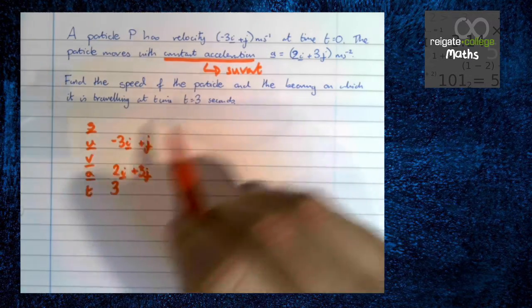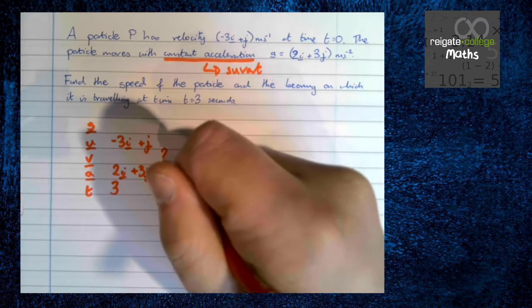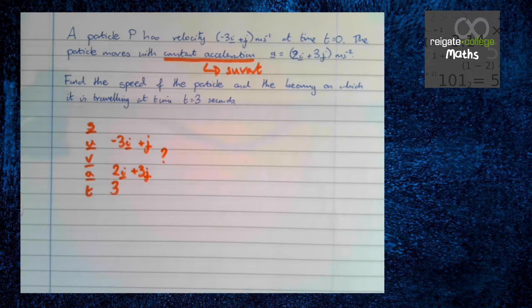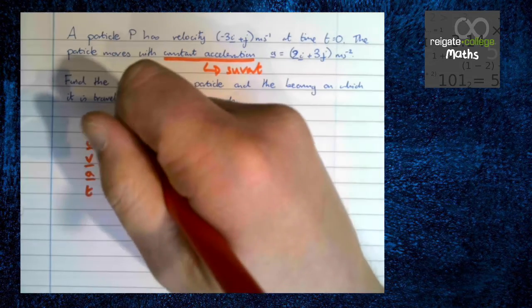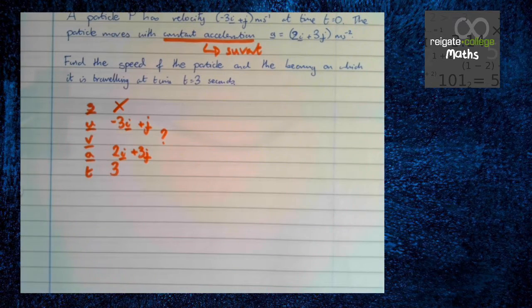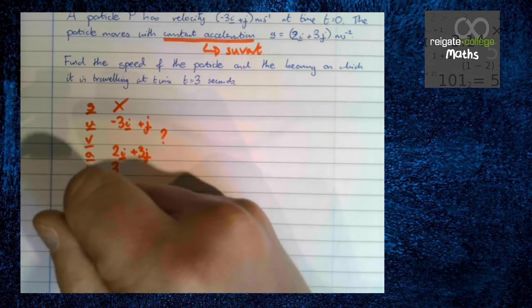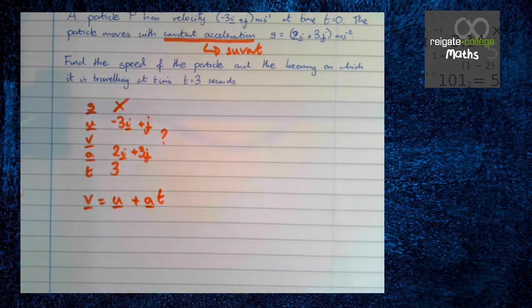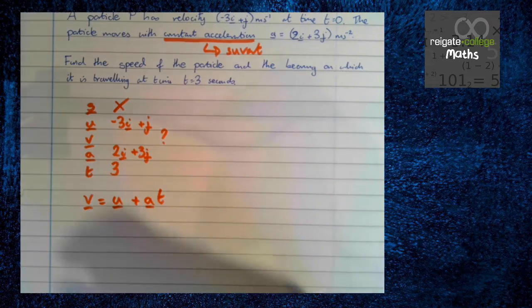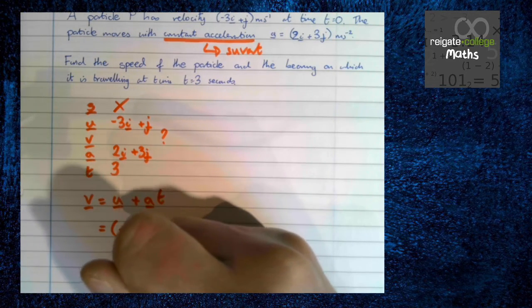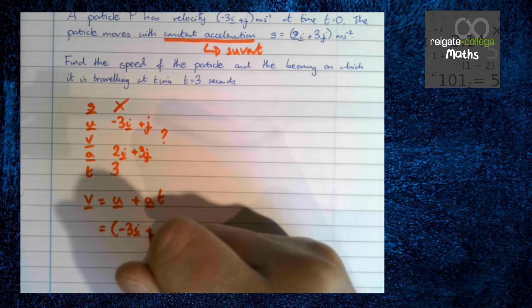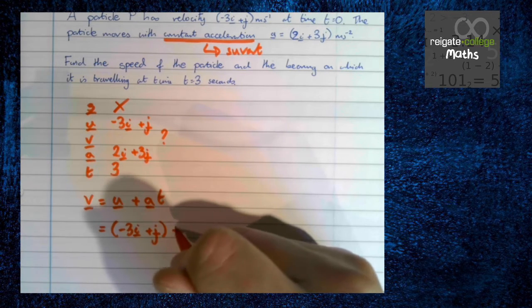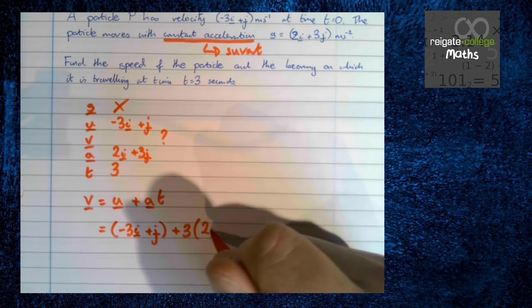And we want the speed of the particle and the bearing on which it's traveling. So we're talking about the direction of motion, not where it is. We're interested in how it's moving. So we're talking about the V, so we don't want S at all. So now we look at v equals u plus at and we just use the equation as normal. So we have u plus 3, the time, times a.